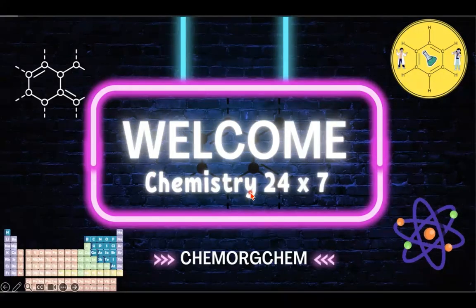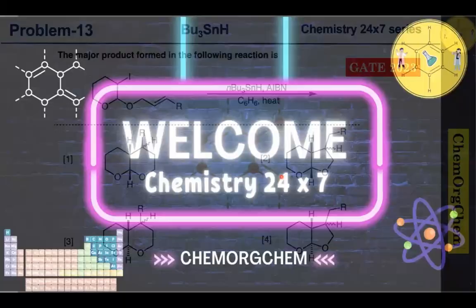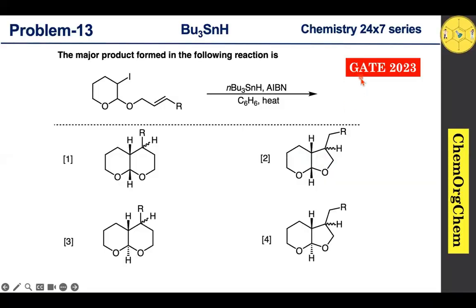Hello everyone, welcome back to Chemistry 24/7 series. In this series we have been exploring solutions for previous year competitive exam papers. If you are new here, don't forget to subscribe and hit the bell icon for notifications. Today's problem is from GATE 2023: a substrate reacts with tributyltin hydride in the presence of AIBN to produce a product. Four products are given — let's figure out together which one is the correct option.